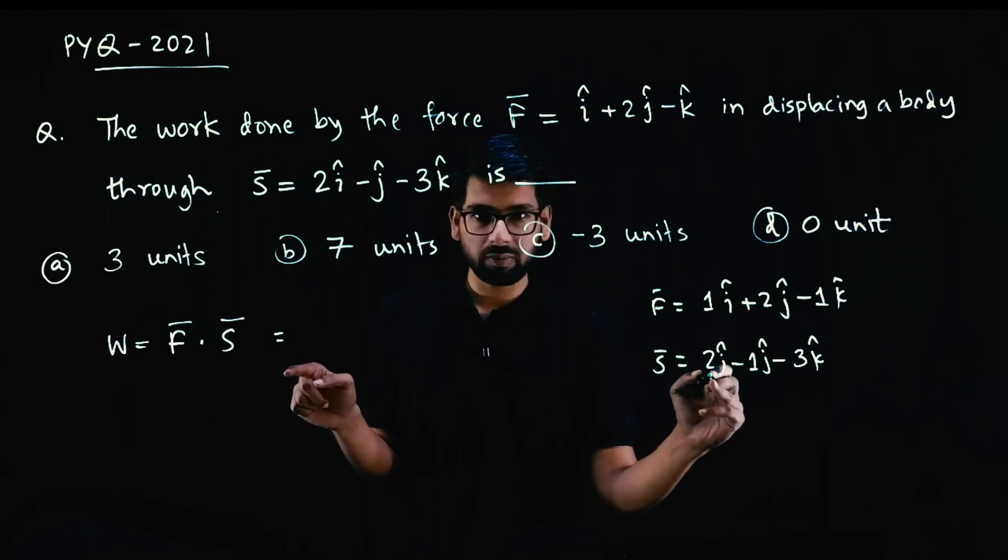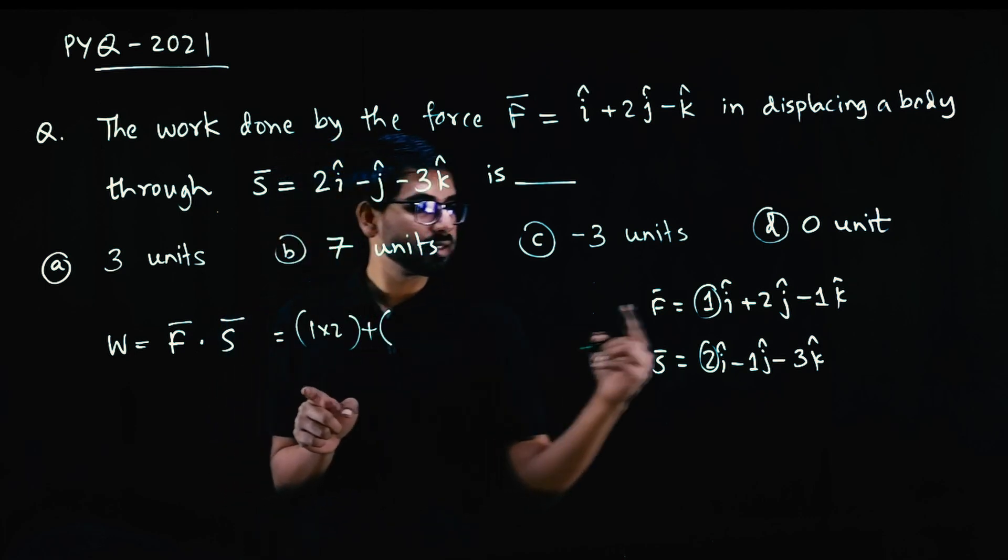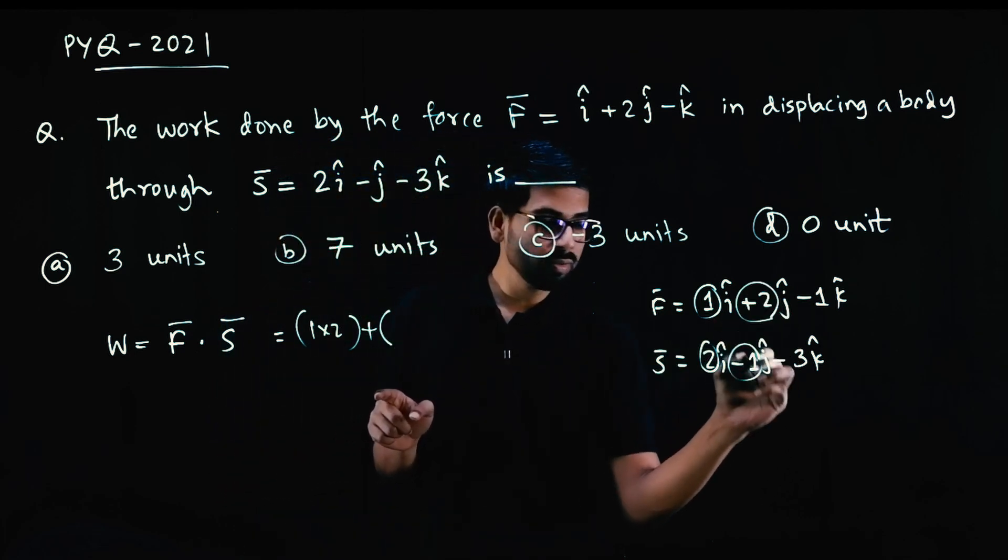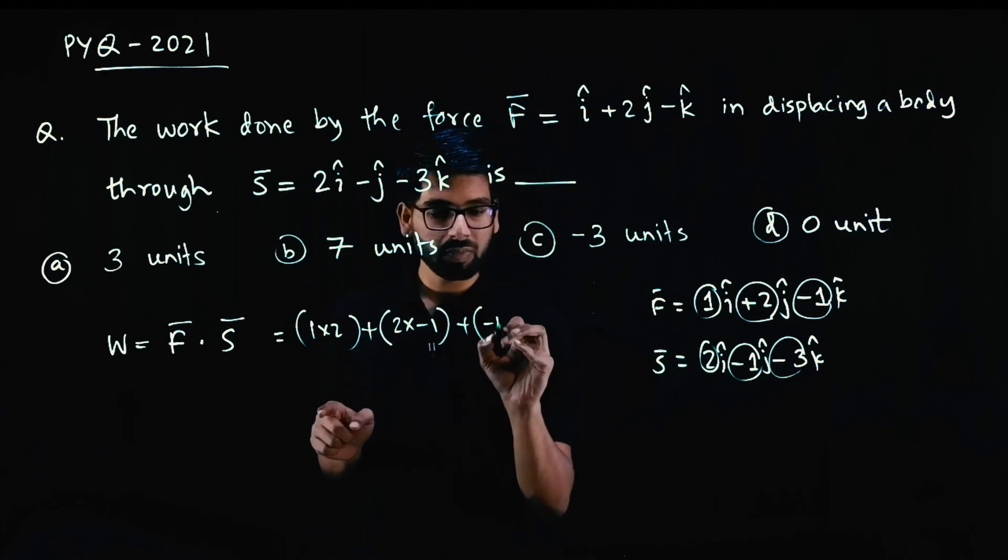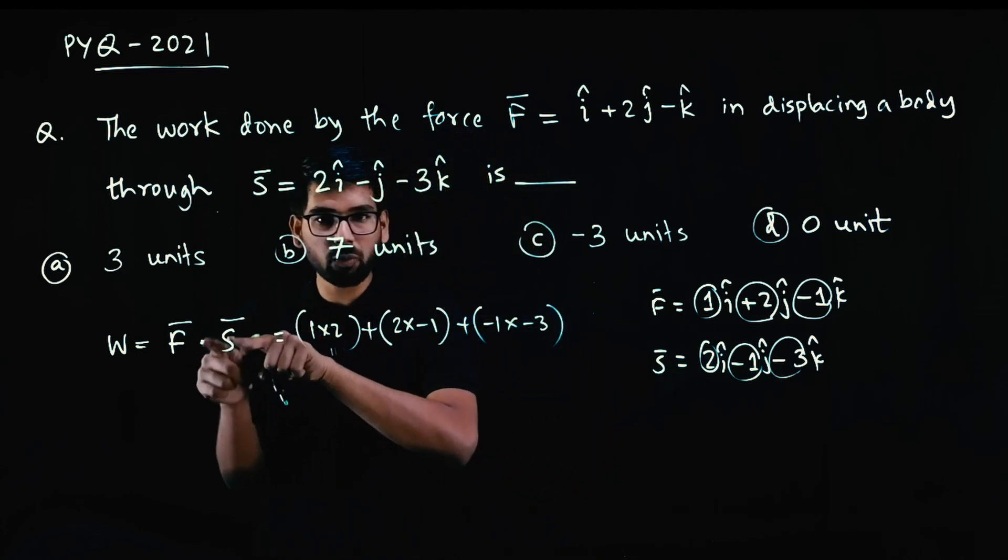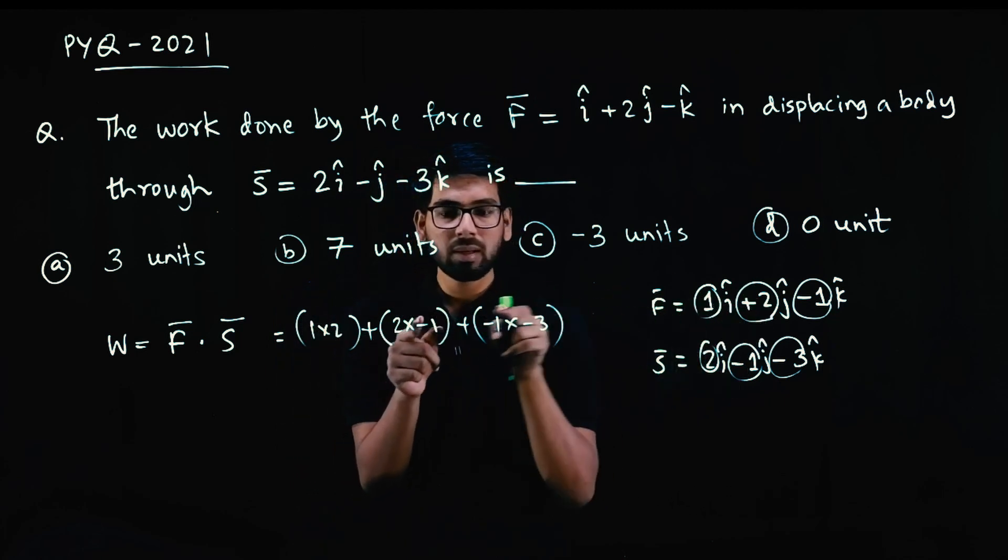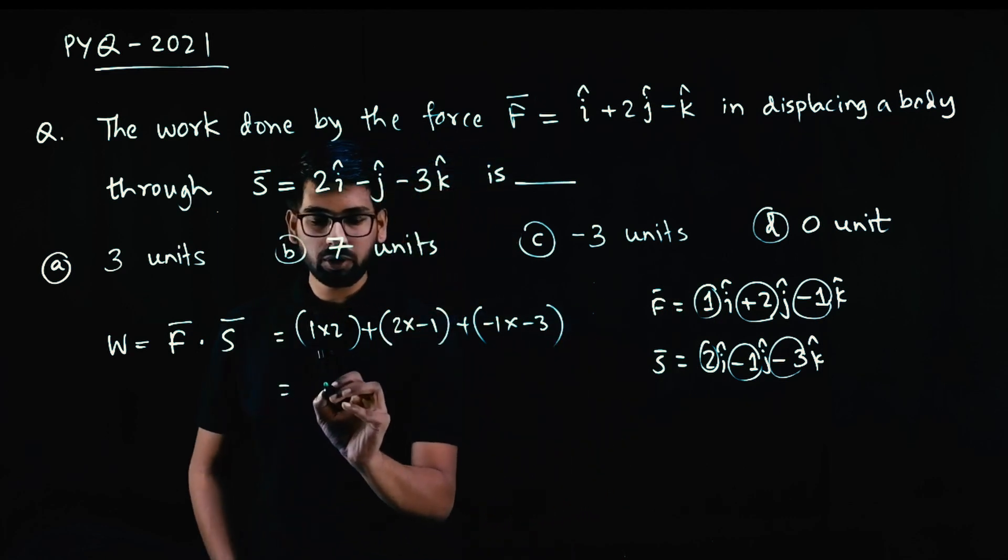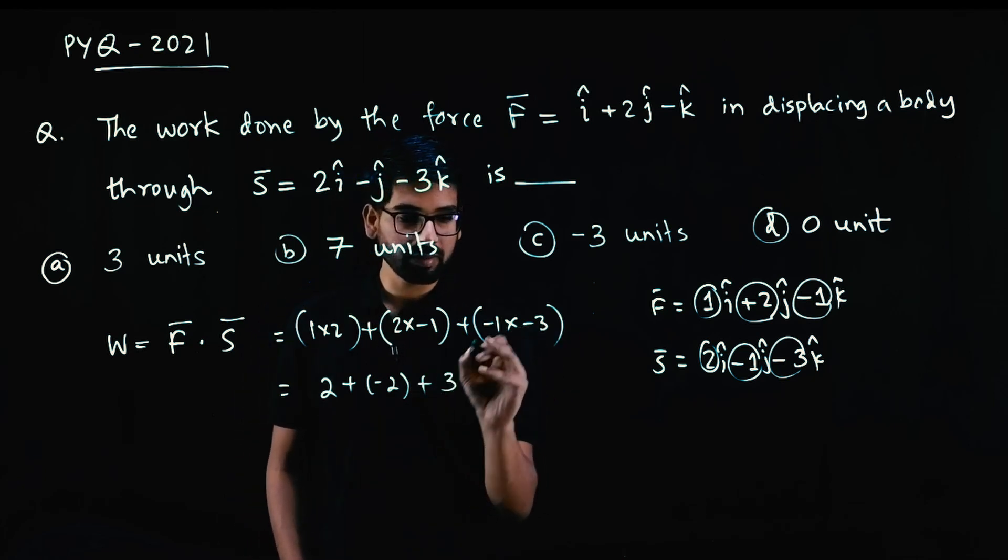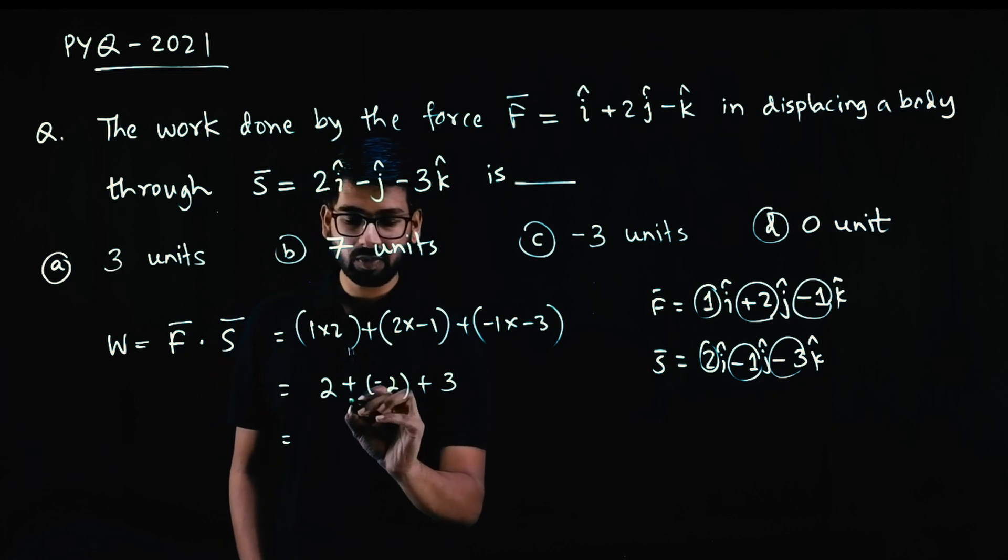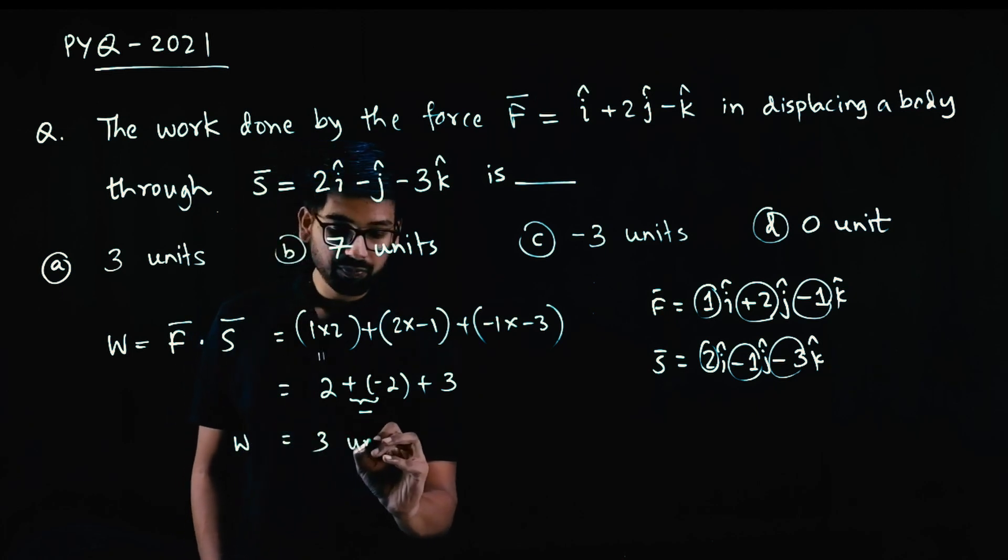I coefficient multiplication, so that is 1 into 2, plus j coefficient multiplication with symbol, plus 2 into minus 1, plus k coefficient multiplication, minus 1 into minus 3. That is how you take dot product. Dot product of two vectors is multiplication of coefficients of i plus coefficients of j plus coefficients of k. So 1 into 2 is 2, plus 2 into minus 1 is minus 2, plus minus 1 into minus 3 is plus 3. 2 minus 2 is 0 plus 3.